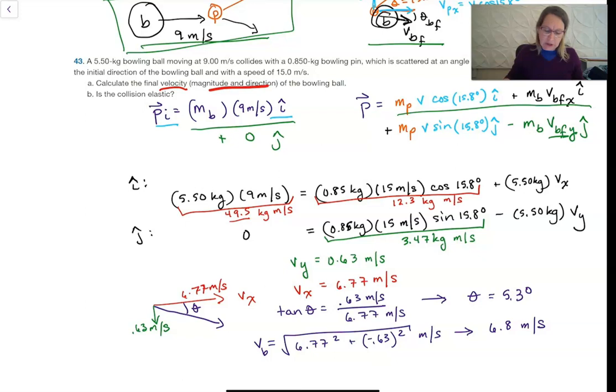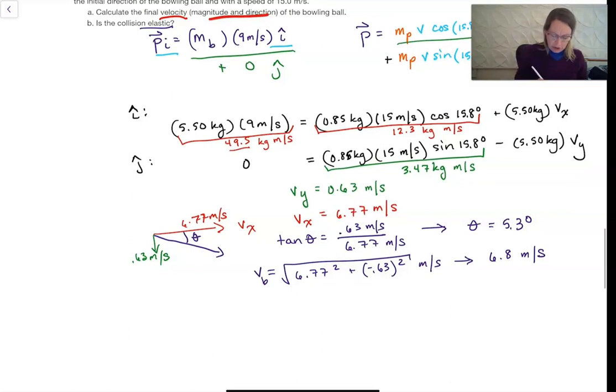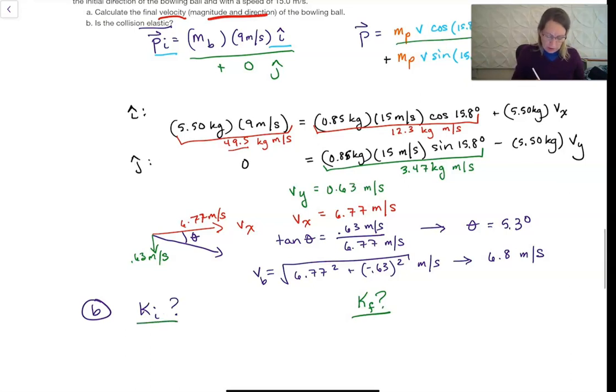The last thing I need to do is to say, is this elastic? The way I tell whether it's elastic or not is I check kinetic energy initial and then I check my kinetic energy final. This includes both objects. Kinetic energy initial is just one half mass of the ball, speed of the ball initial squared, which is one half times 5.50 kilograms times 9 meters per second squared, equals 223 joules.